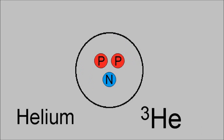Helium-3 is the second most common form of helium. It makes up about 0.000137% of all helium atoms in the universe. It has an atomic number of 2 and a particle number of 3, consisting of 2 protons and 1 neutron. It has an atomic weight of 3.0160293, and it is stable.